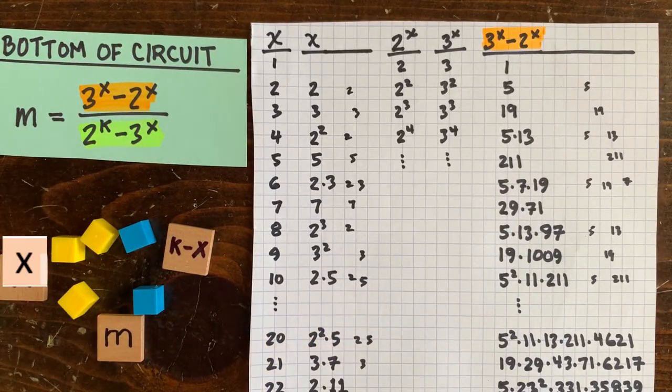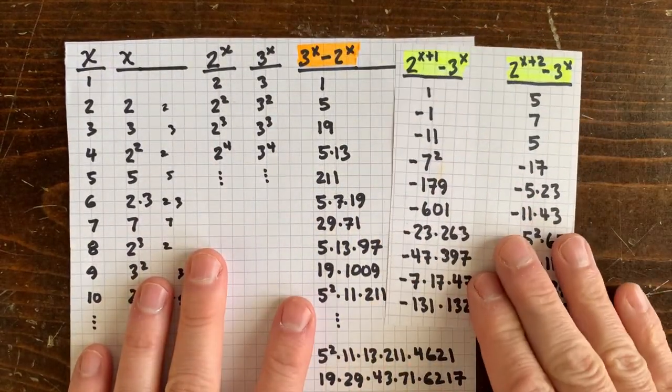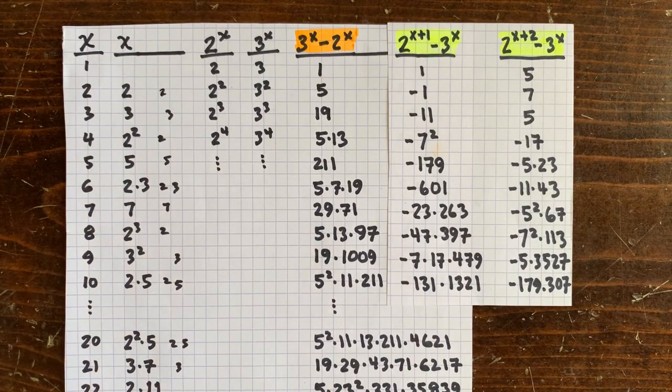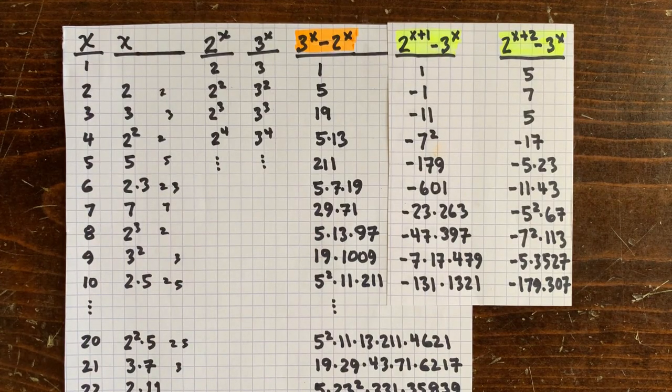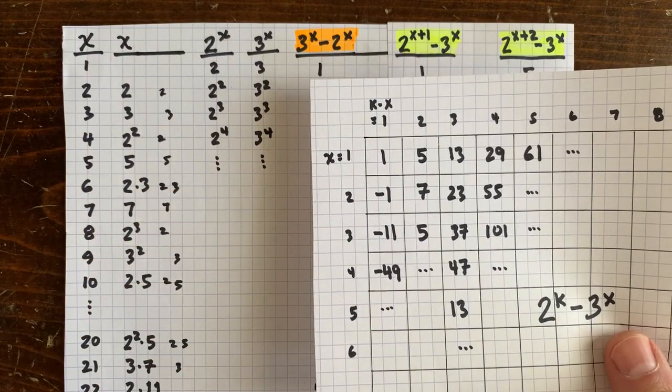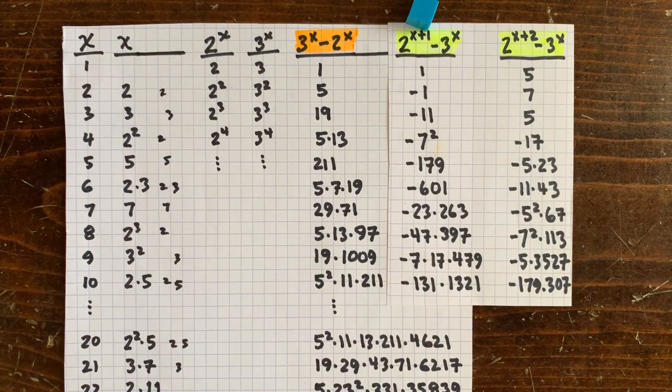So how about the denominator, 2 to the k minus 3 to the x? How does it factorize? Well, here we need a two-dimensional table because there's a k and an x. And there's definite patterns here too. But for now, let's just focus on the first column, where the number of blue down moves is just 1. So any number of up moves followed by one down move.